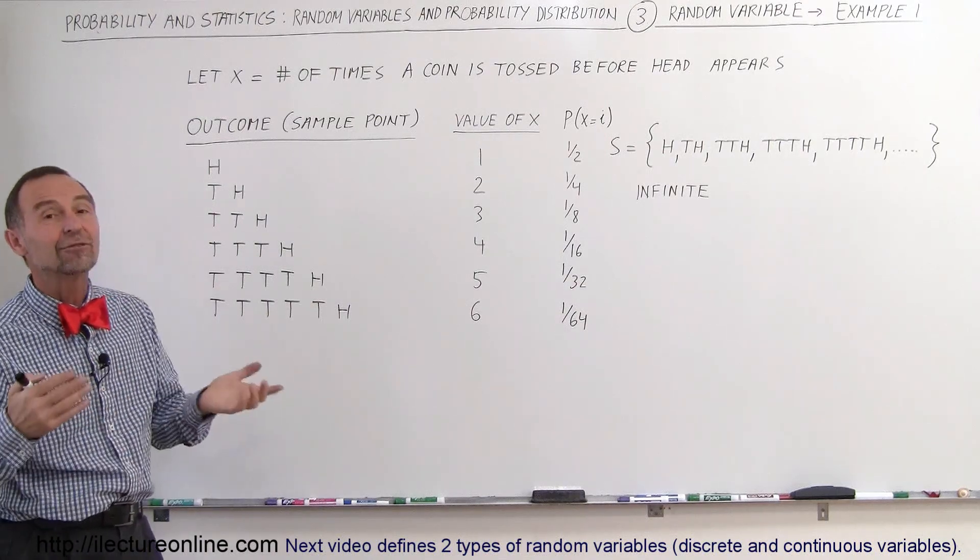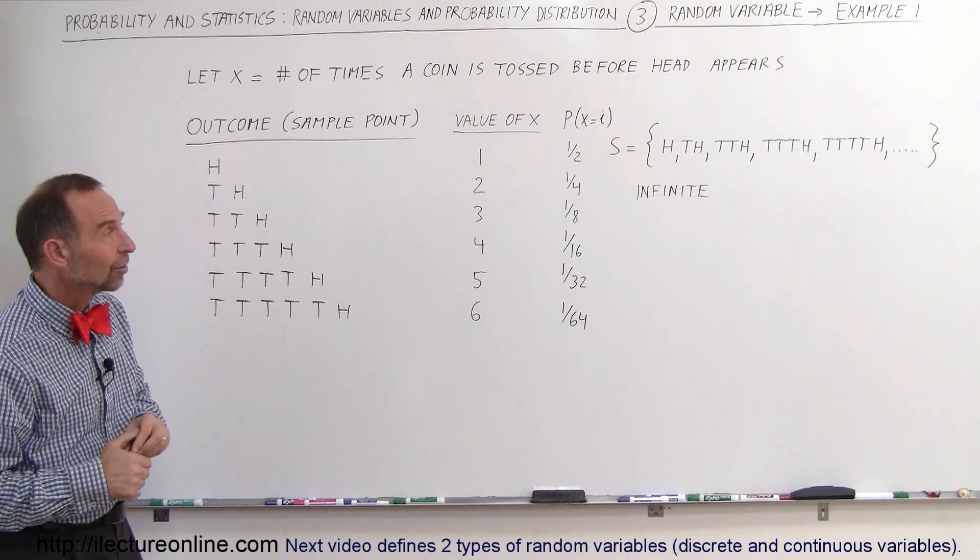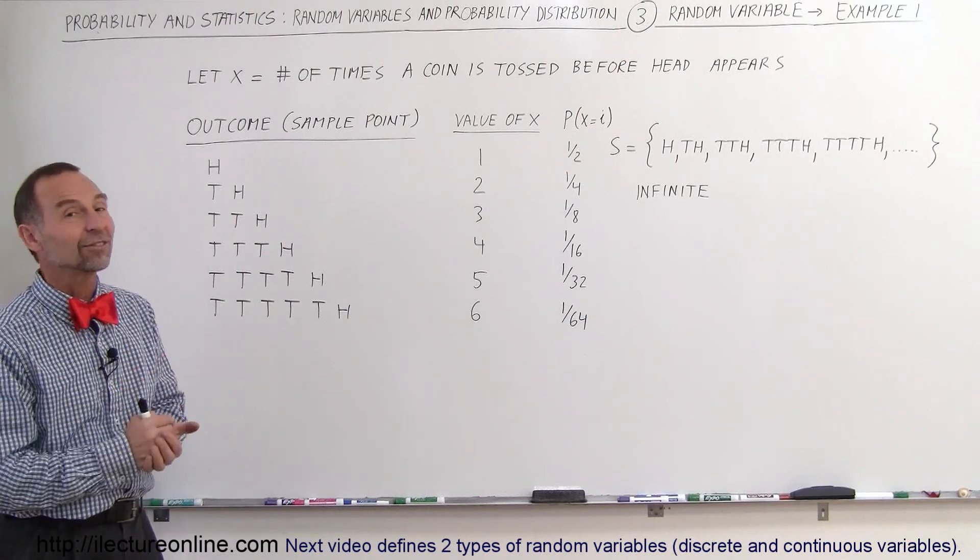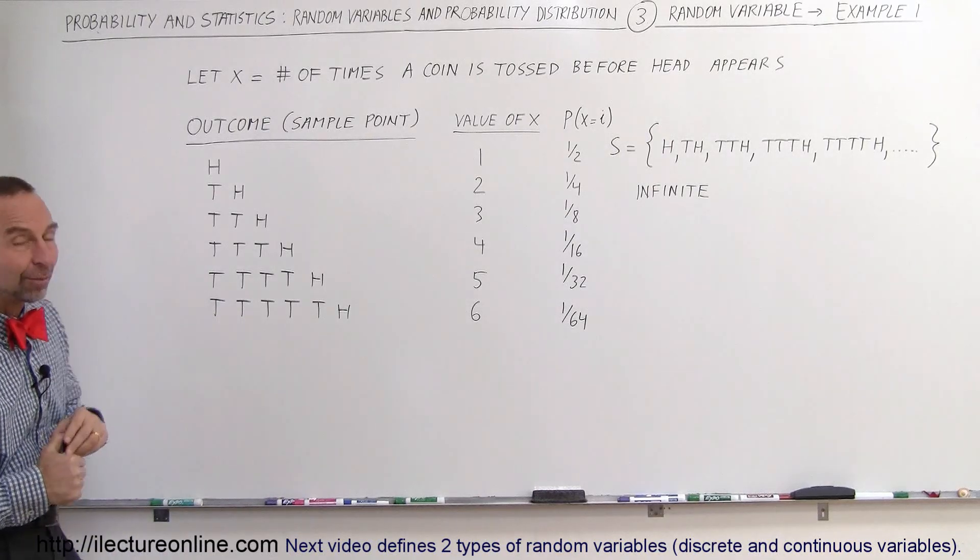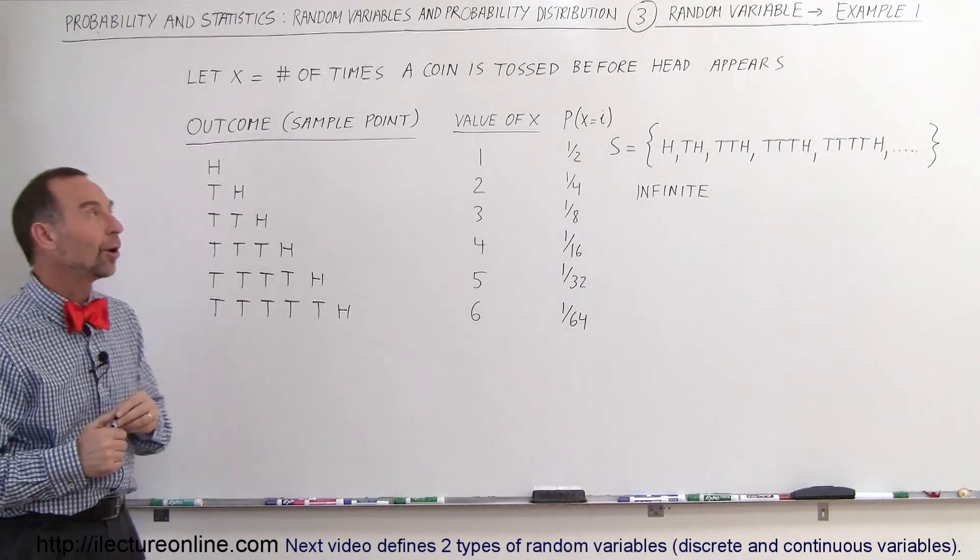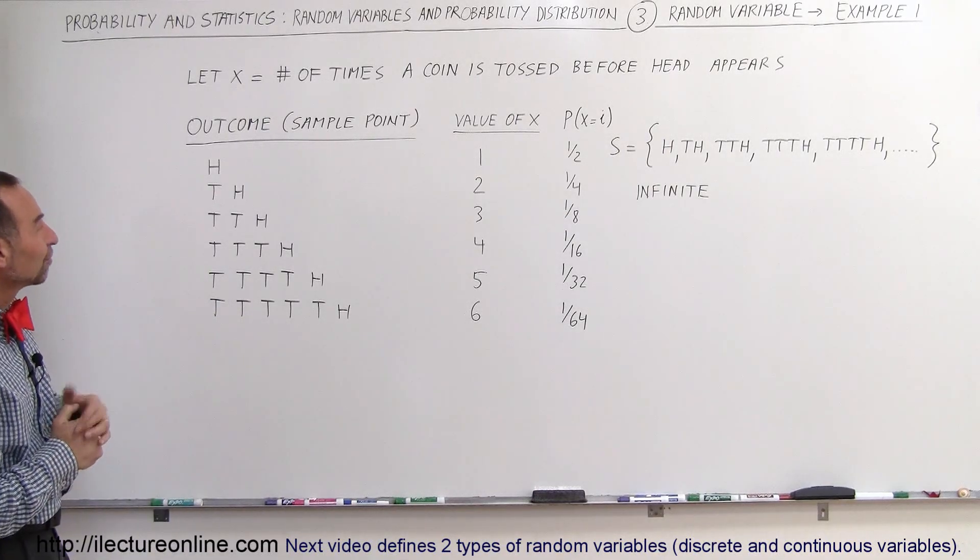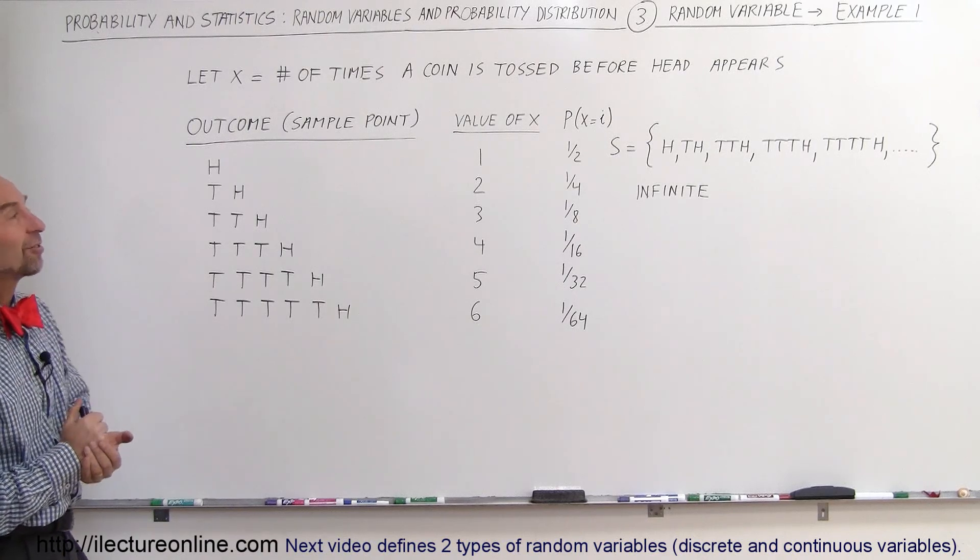So in this case, X can be an infinite number, and therefore, the sample space is infinite, and a good example where it's not bounded. And so we'll see some examples of some other types of what we call random variables, but this is a really interesting example.